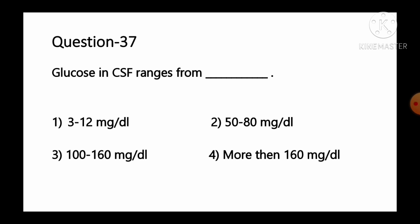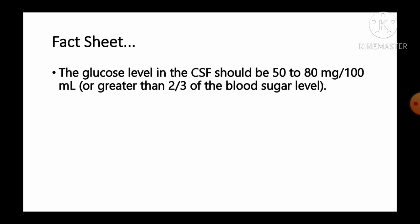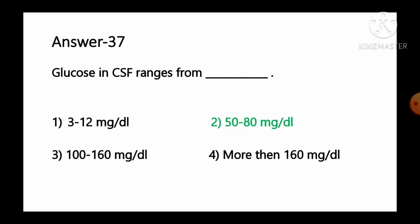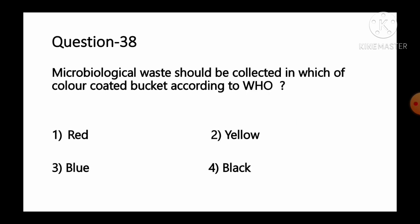Question number 37: Glucose in CSF ranges from — option 1 3 to 12 mg/dL, option 2 50 to 80 mg/dL, option 3 100 to 160 mg/dL, option 4 more than 160 mg/dL. Glucose level in CSF should be around 50 to 80 mg per 100 mL or deciliter, or greater than two-thirds of the blood sugar level in serum or plasma. So option number 2, 50 to 80 mg/dL, is the correct answer.